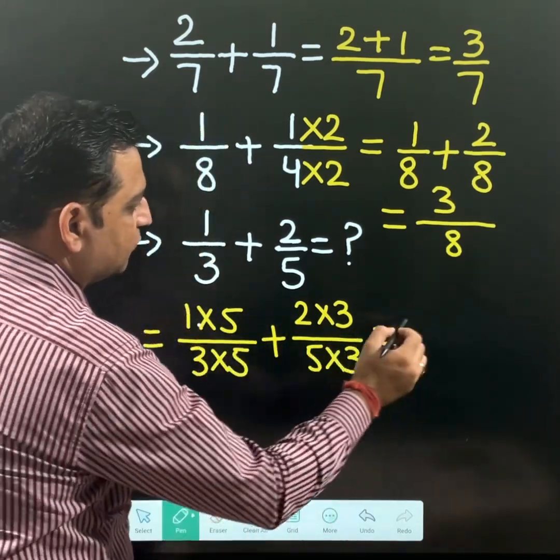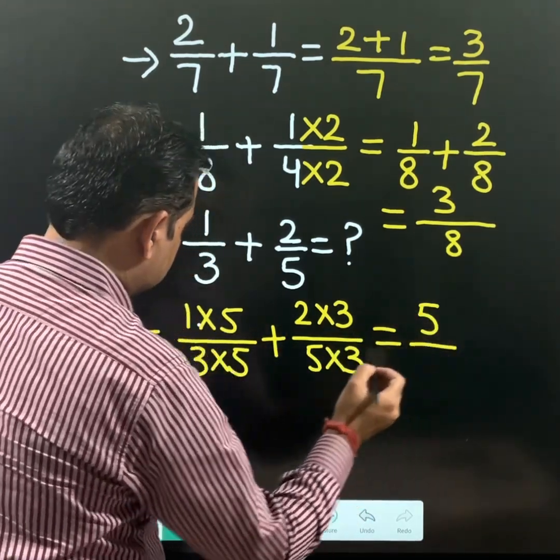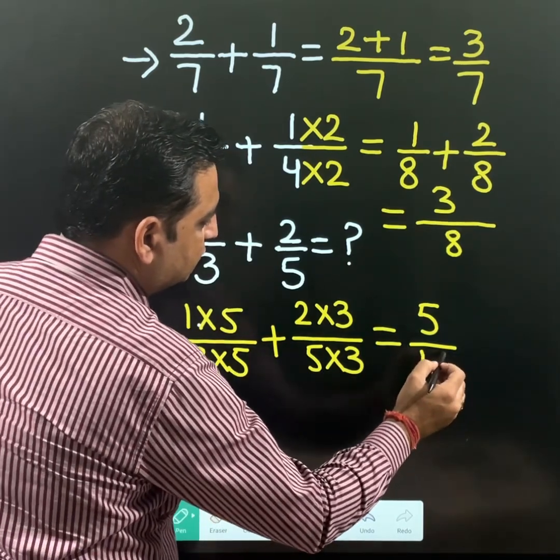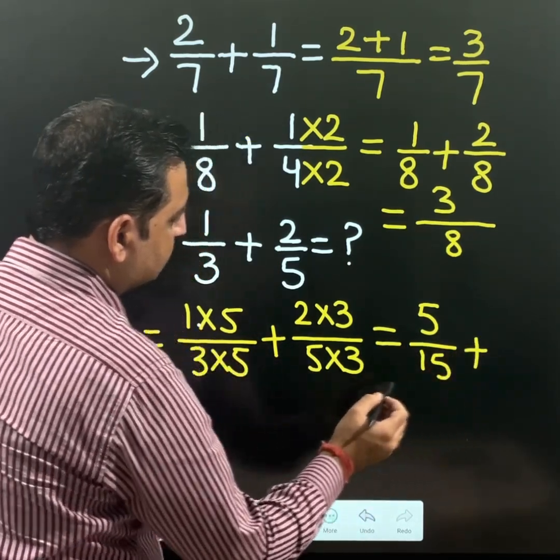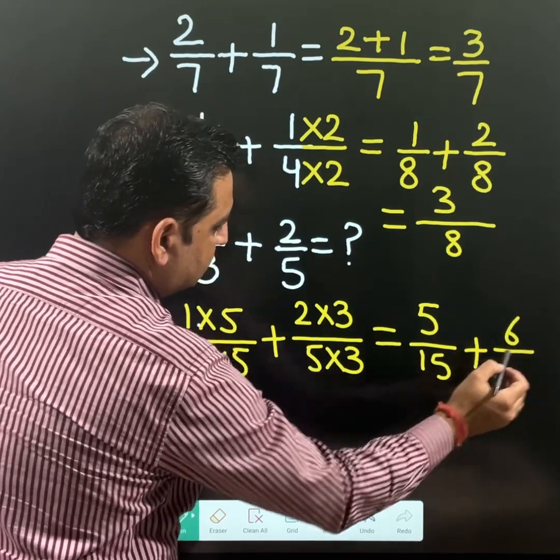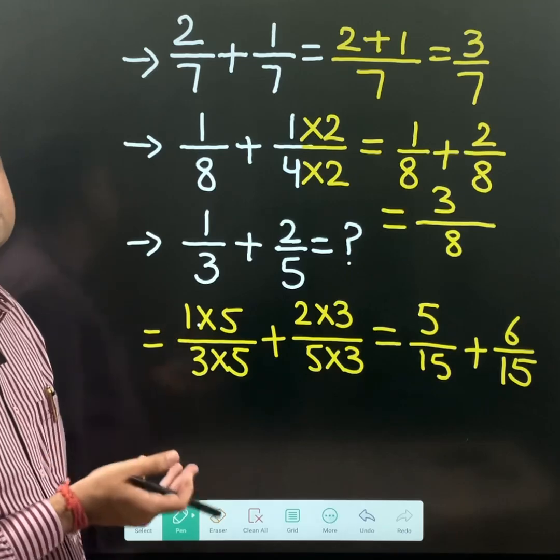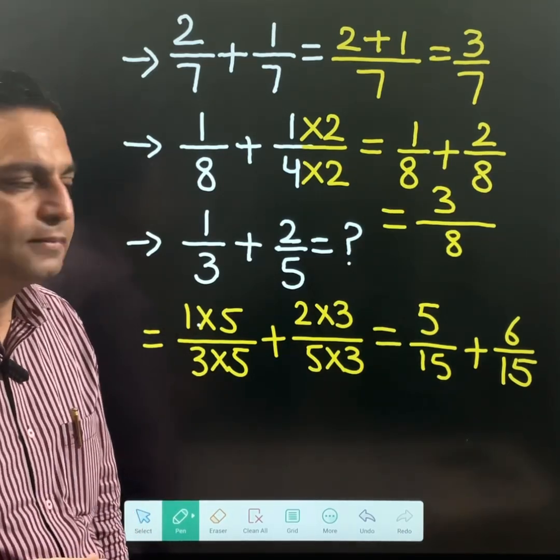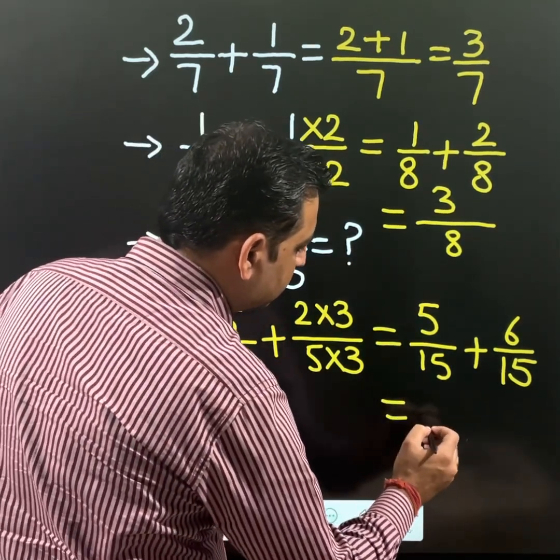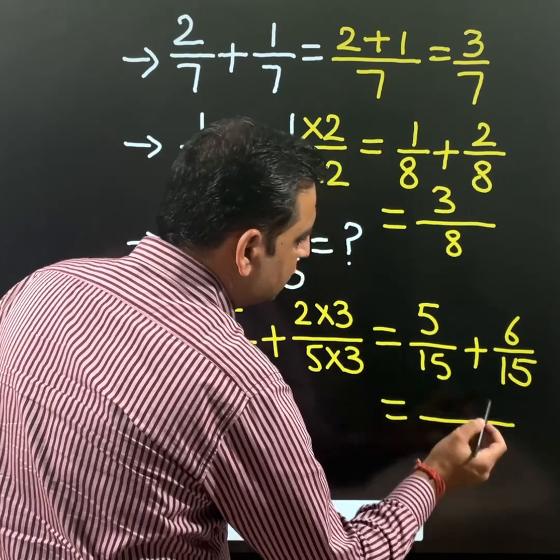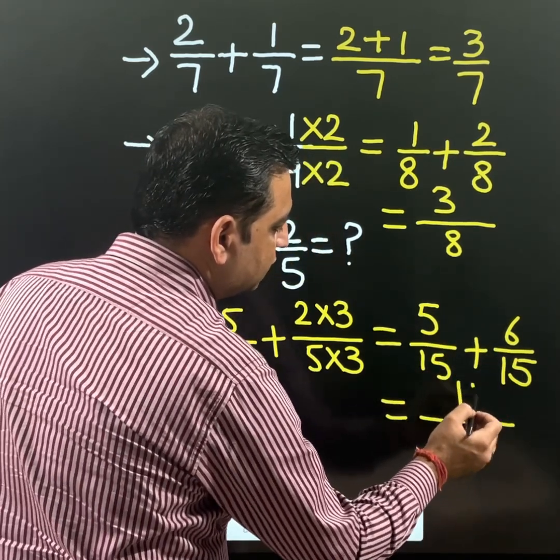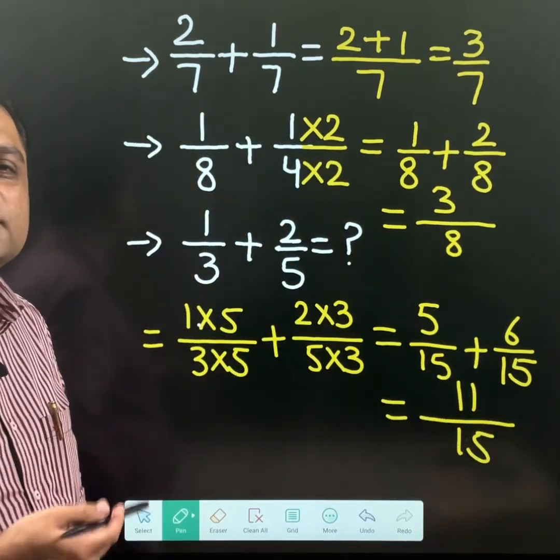1 times 5 is 5, 3 times 5 is 15, plus 3 multiplied by 2 is 6, 5 multiplied by 3 is 15. See, making the denominator the same is the main thing. Now when the denominator is the same, the upper values 5 and 6 are added. 11 over 15 is the answer. So this is what I have covered with the basic concept.